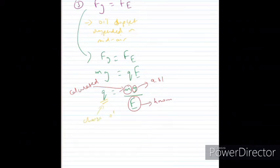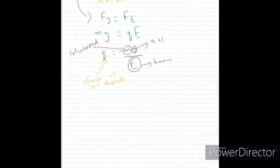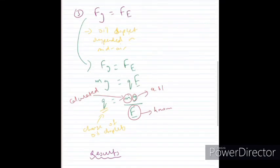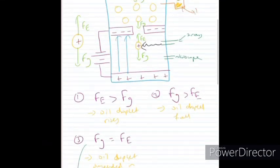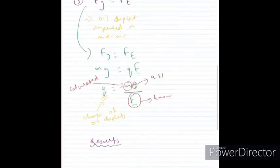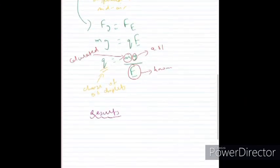So we have calculated the charge of oil droplets. Now, how do we go from the charge of the oil droplets to the charge of the electron itself? That's going to depend on looking at a couple more results. It's important to note that Millikan didn't only look at one oil droplet. He actually looked at multiple oil droplets and calculated the charge of those droplets.